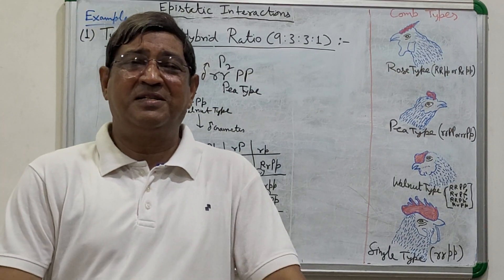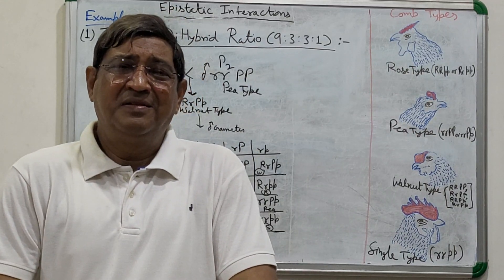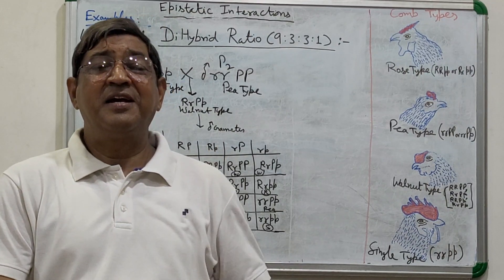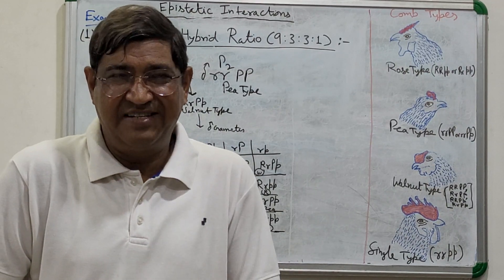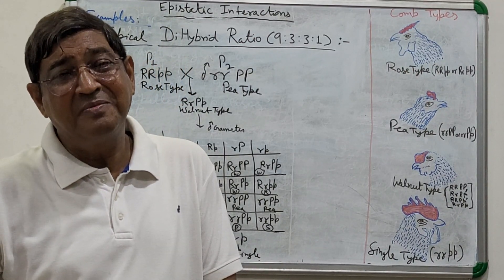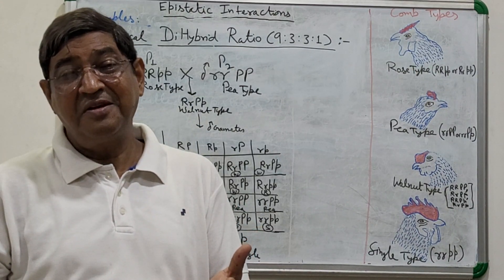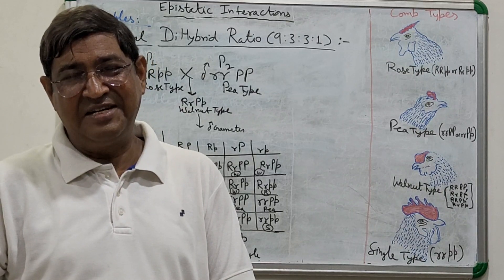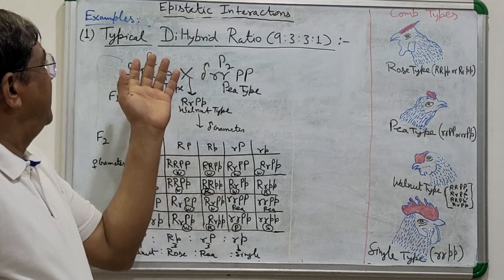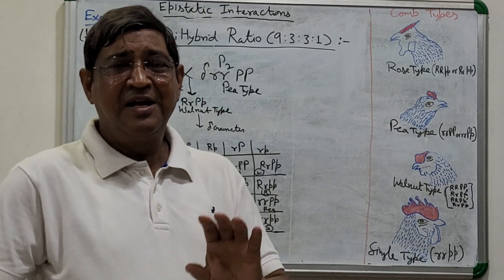If these two different genes are coming separately, they give two different types of trait. If both genes are coming together in dominant phase, they give a third type of trait. If both genes are coming together in recessive form, they give a fourth type of trait. So I'm going to deal with the typical dihybrid ratio 9:3:3:1 in F2 generation.